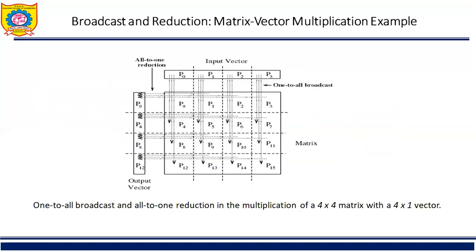In this example, p9 will receive x of 1 from p1 as a result of the broadcast, and will multiply it with a of 2,1. It will then participate in all to one reduction with p8, p10, and p11 to accumulate y of 2 on p8.